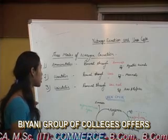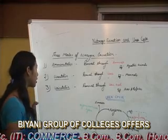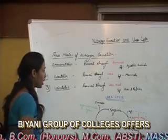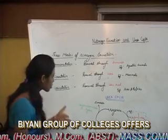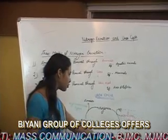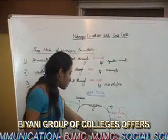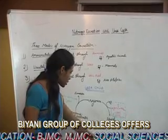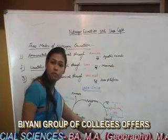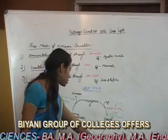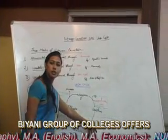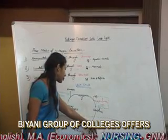Focusing on the second one, that is the Ureotelic animals, wherein the Nitrogen is removed in the form of Urea. The Urea Cycle starts with the formation of Carbamoyl Phosphate. Carbamoyl Phosphate is formed in the mitochondrial matrix, wherein the Amino group combines with Carbon Dioxide, resulting in the formation of Carbamoyl Phosphate.